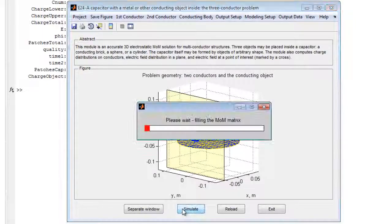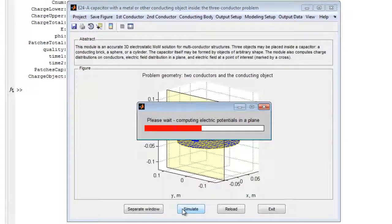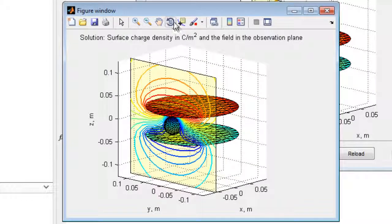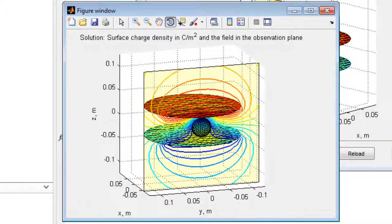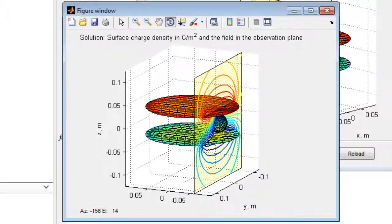If the zero charge condition is removed, an object potential equal to the potential of the lower plate may be assigned. Run the simulations again and open the results in a separate window. Here we see that the potential distribution has changed.